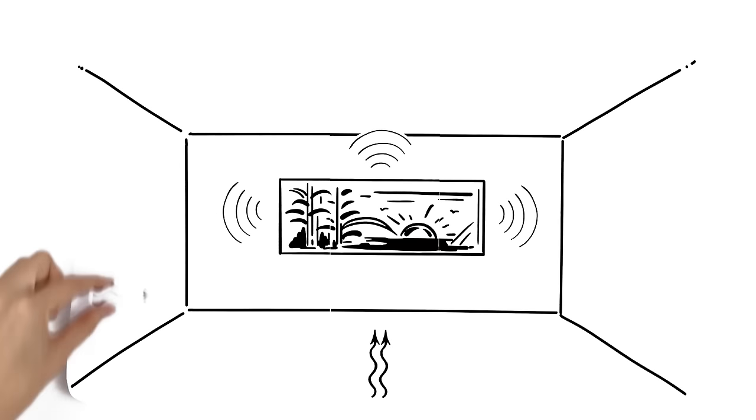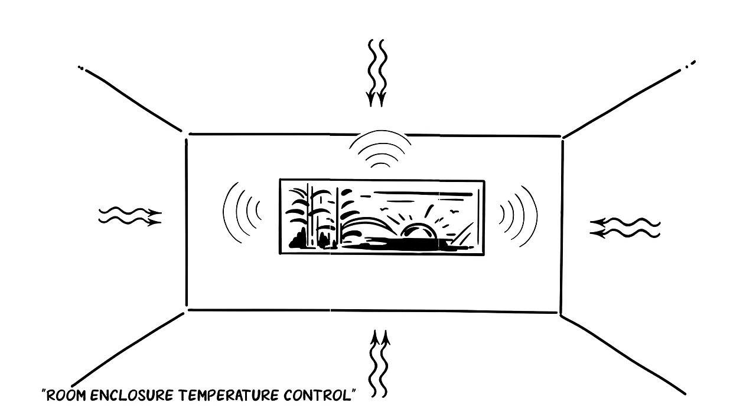The heat is stored there and slowly released over time. This is known as room enclosure temperature control.